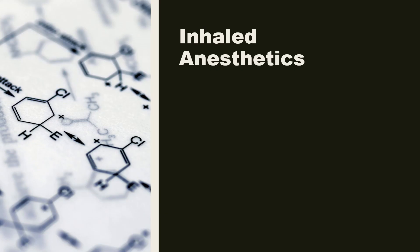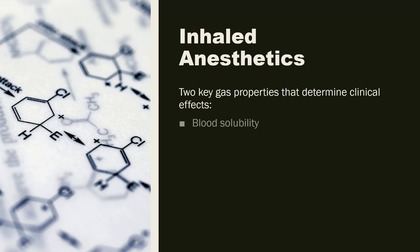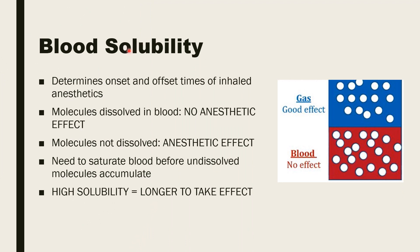There are two key properties that determine the clinical effect of a general anesthetic. One is the blood solubility, and the other is the lipid solubility. The blood solubility of a gaseous anesthetic determines the onset and offset time of the inhaled anesthetic drugs. Molecules dissolved in blood have no anesthetic effect, but molecules that are not dissolved in blood can produce the anesthetic effect through their actions on the brain.